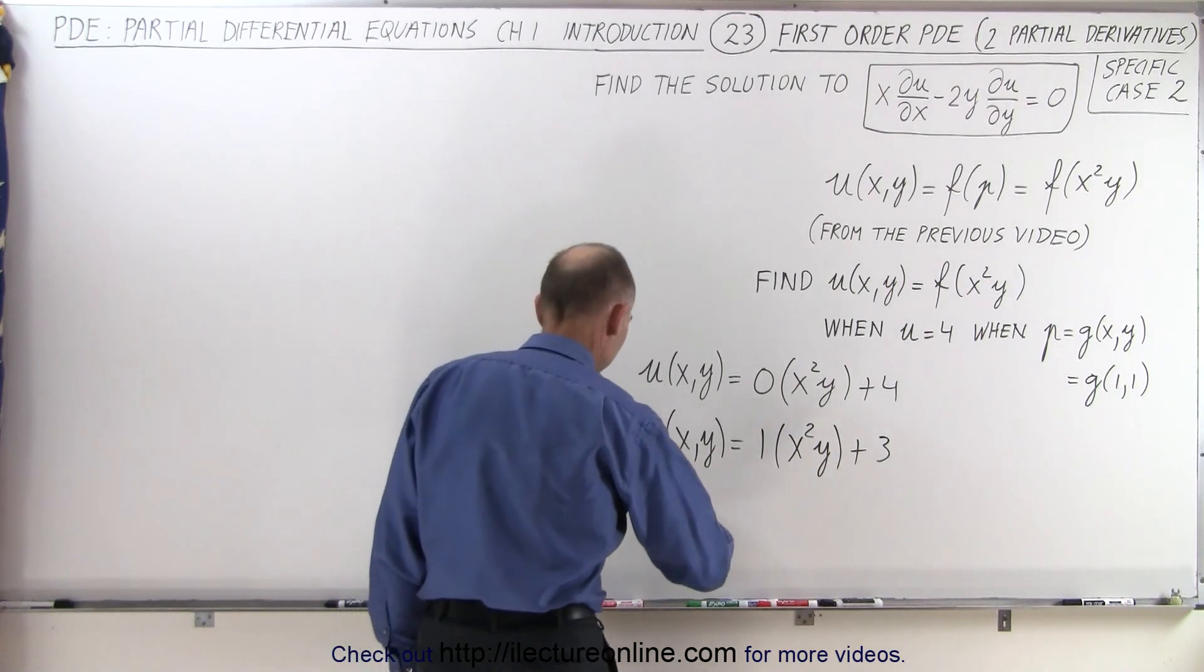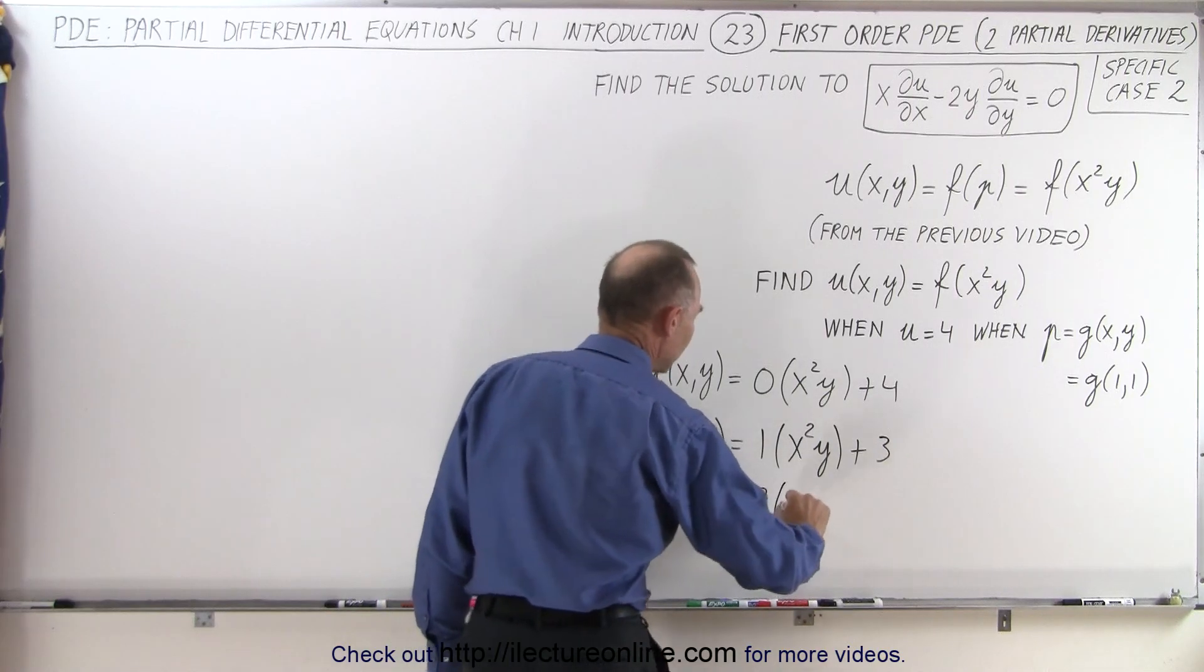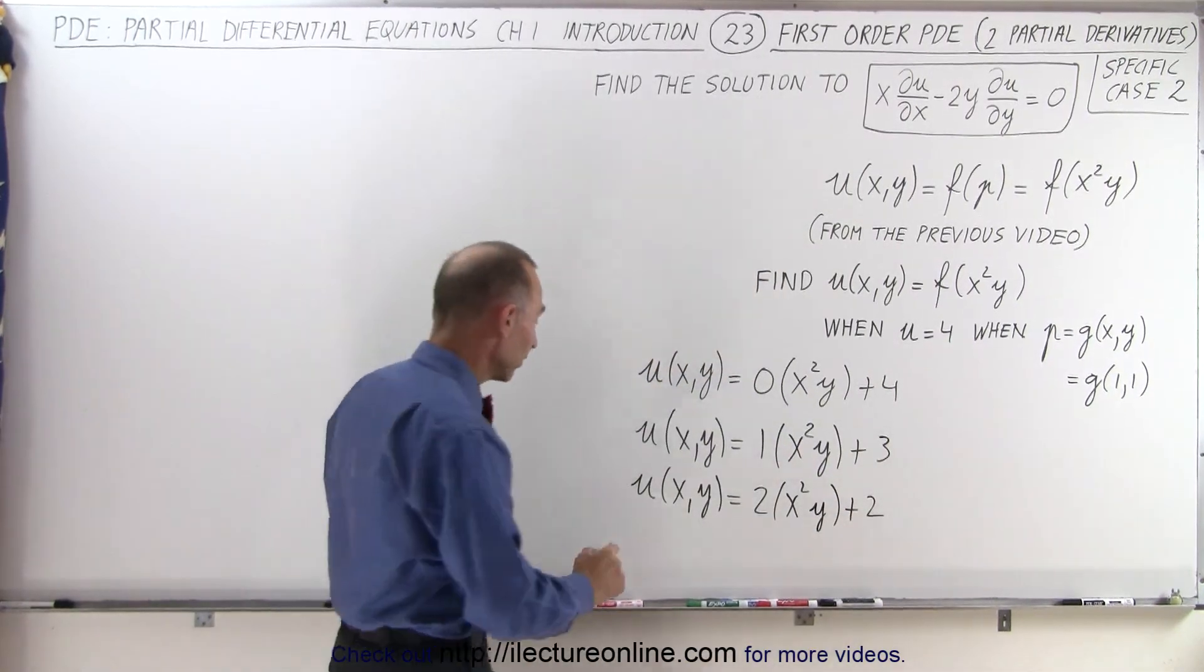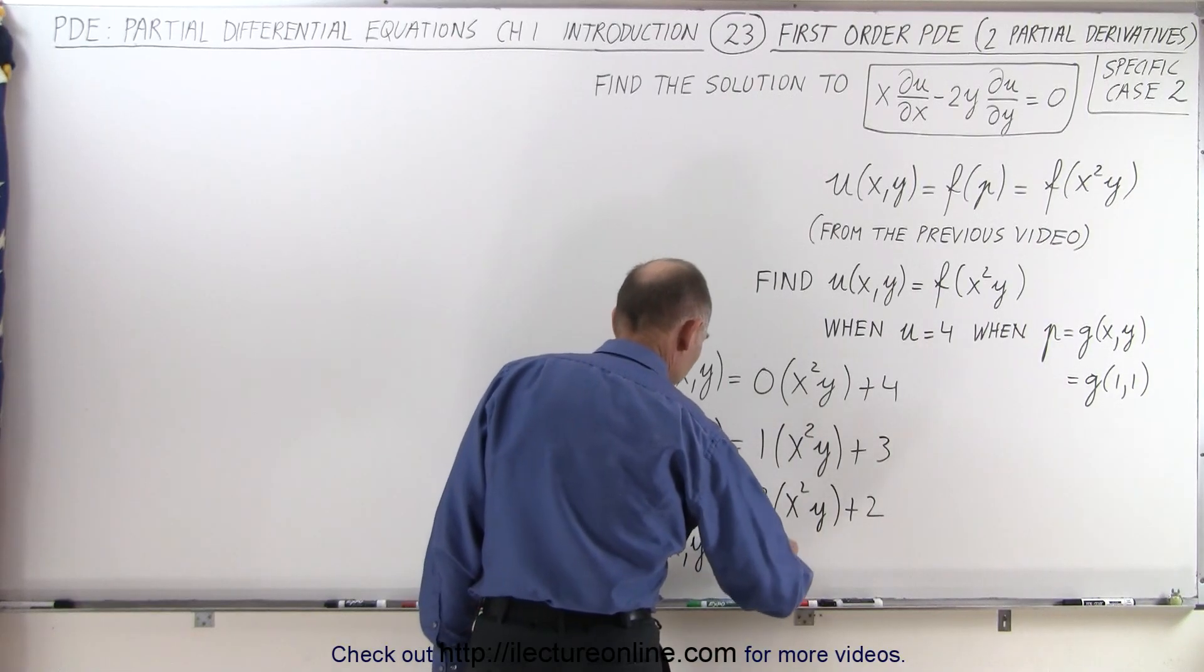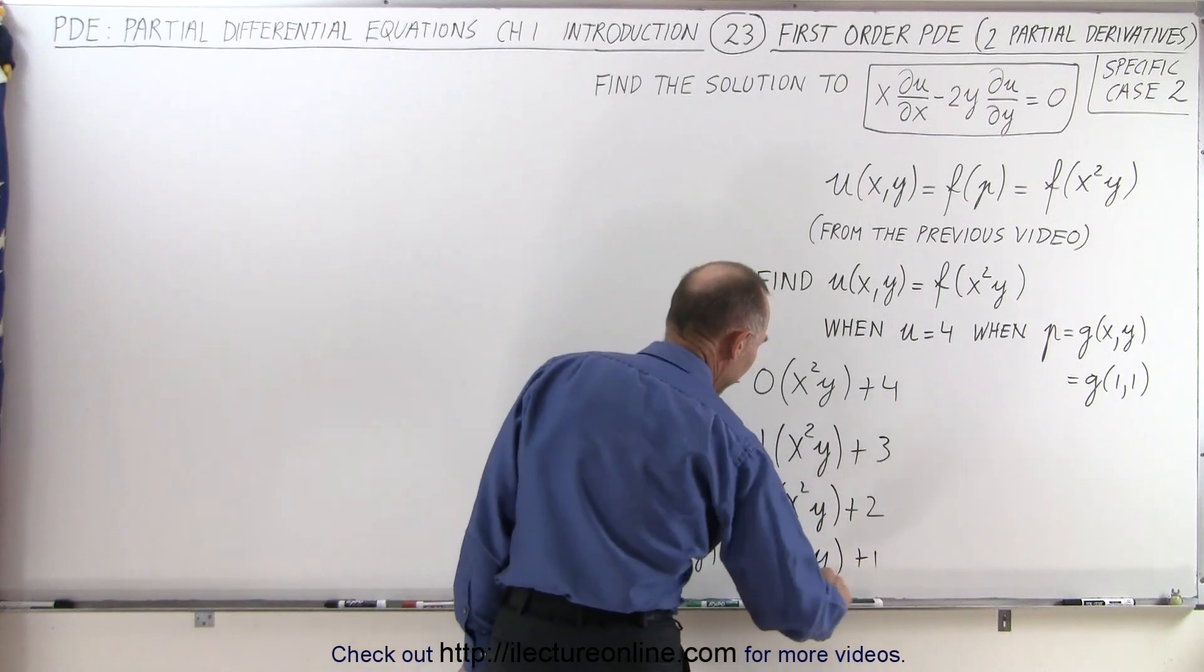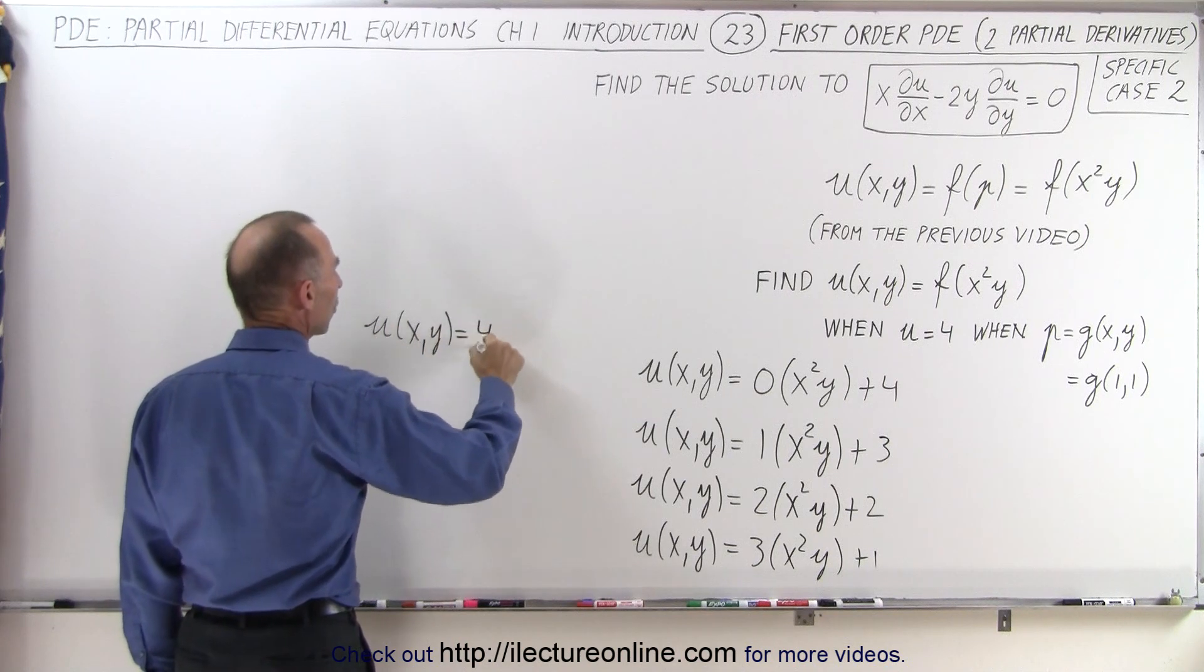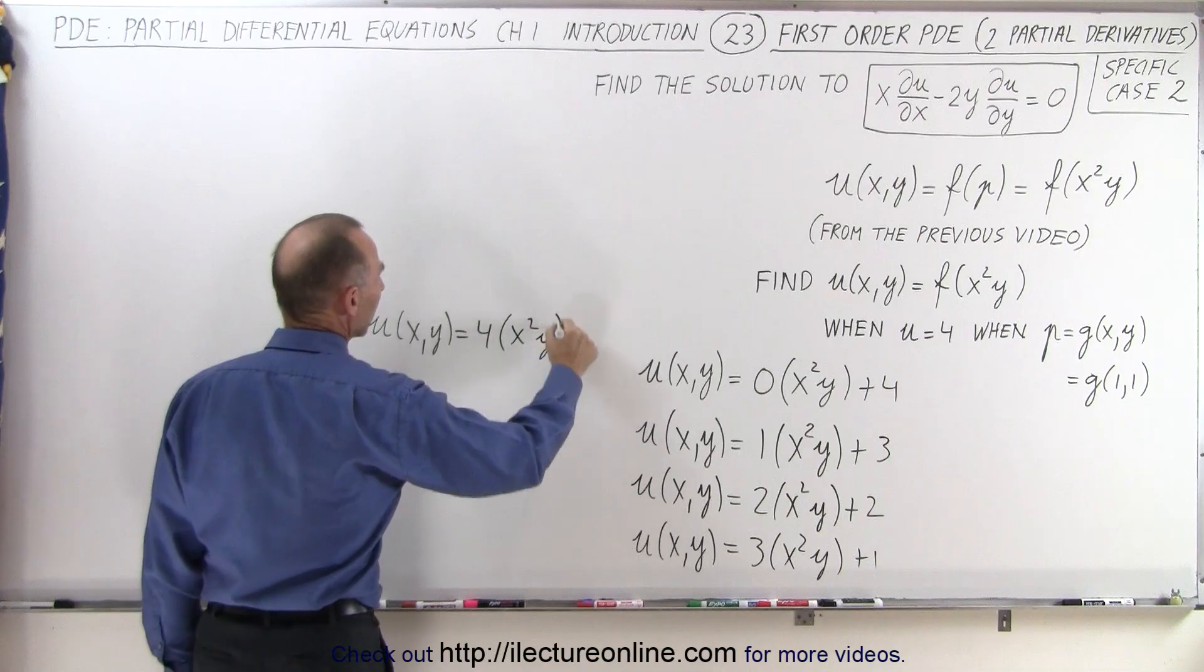So now we can see a pattern that if you say u of x comma y is equal to 2 times x square y plus 2 that also would give us the right answer or we can say that u of x y is equal to 3 times x square y plus 1 and I think you can see the pattern. We can also use u of x y equal to 4 times x square y.